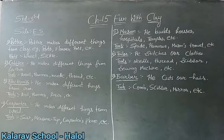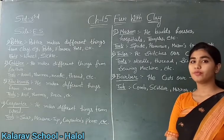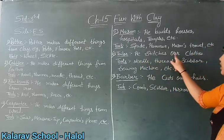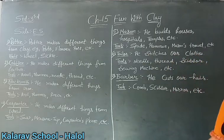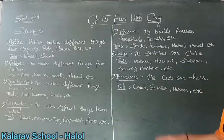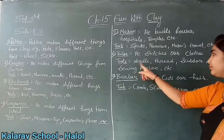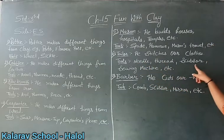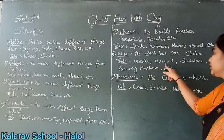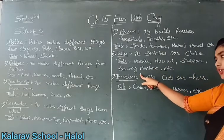Now see number 6, what is written? Taylor. What work does tailor do? He stitches our clothes. Here you will write in front of tailor: he stitches our clothes. Then we will write tools which tailor uses: needle, thread, scissor, and sewing machine.